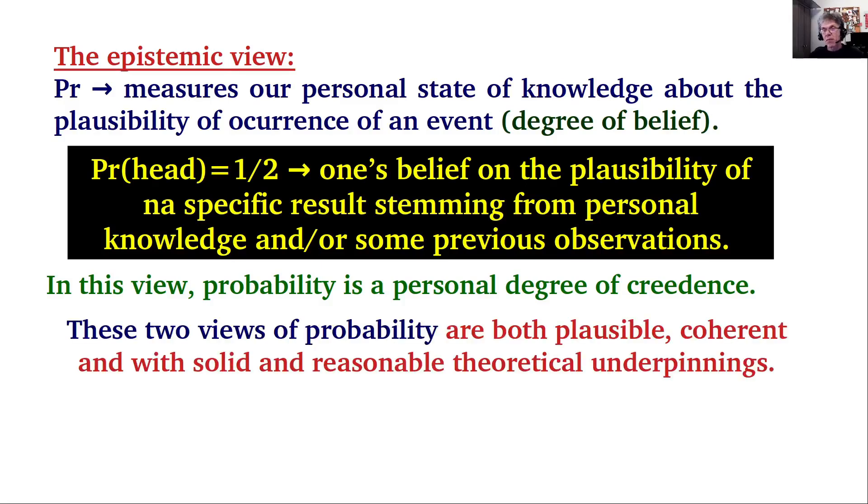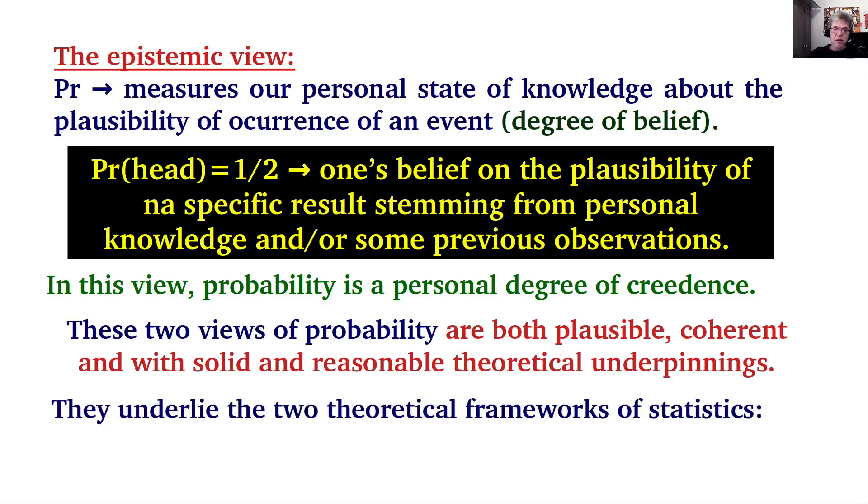These two views of probability are both plausible, coherent, and both have solid and reasonable theoretical underpinnings. They underlie the two theoretical frameworks coexisting in statistics: frequentist statistics and Bayesian statistics.